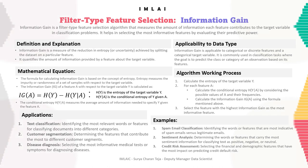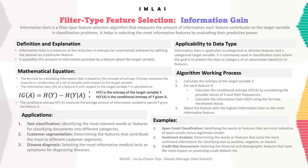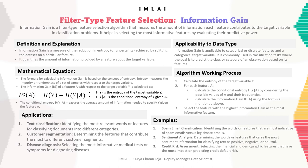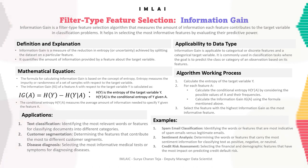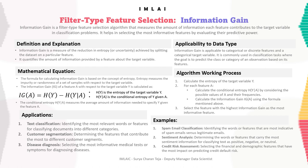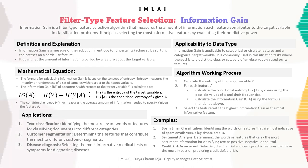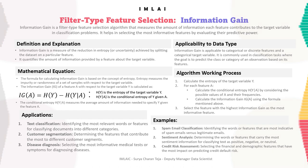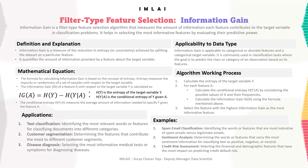Overall, information gain is a useful feature selection algorithm in classification problems, providing a quantitative measure of the information contributed by each feature to the target variable. It helps in identifying the most relevant and informative features for predictive modeling purposes.